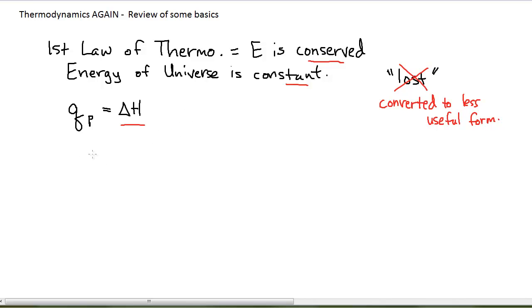We learned back in Chem 1 that if a system absorbs heat, we say that that process is endothermic. And we give the Q a positive numerical sign. So Q would be greater than zero or delta H would be greater than zero, a positive numerical value.